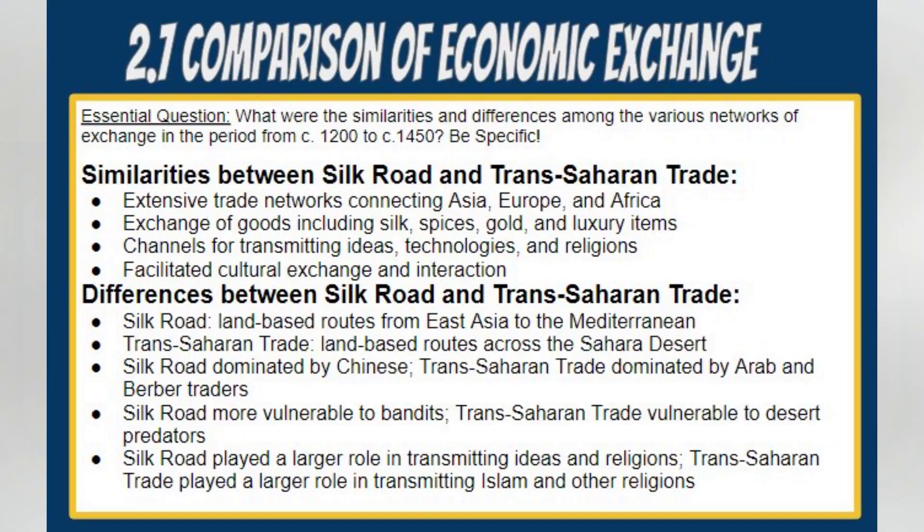Lastly, exploring the similarities and differences between the Silk Road and Trans-Saharan trade: these two major trade networks connected Asia, Europe, and Africa during the Middle Ages, promoting the exchange of goods, ideas, and cultures. The similarities between them include their extensive reach, their facilitation of the exchange of a wide range of commodities, their function as channels for the transmission of ideas, technologies, and religions, and their contribution to cultural exchange and interaction among societies. However, notable distinctions exist. The Silk Road was a land-based network of trade routes stretching from East Asia to the Mediterranean, while the Trans-Saharan trade consisted of land-based routes that spanned across the Sahara Desert. The Silk Road was dominated by Chinese influence, particularly in silk production and trade, whereas the Trans-Saharan trade was primarily dominated by Arab and Berber traders.